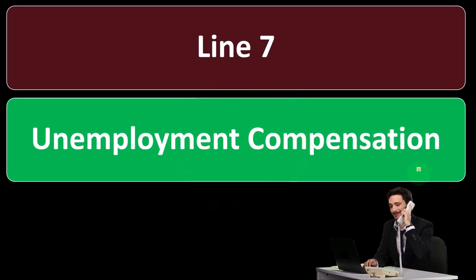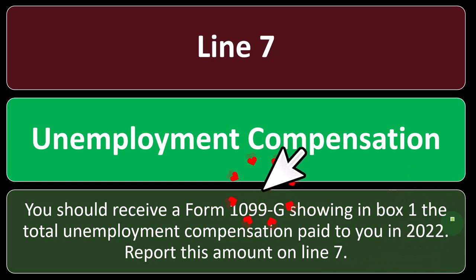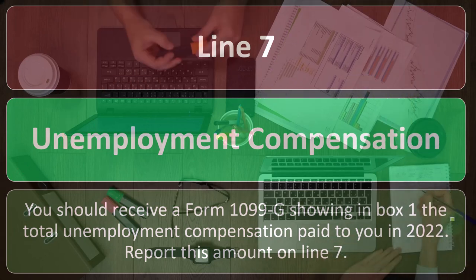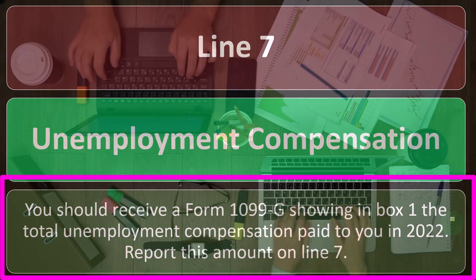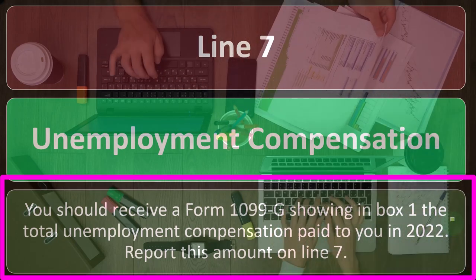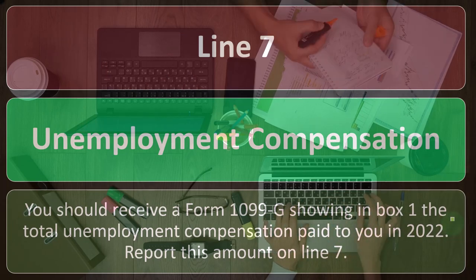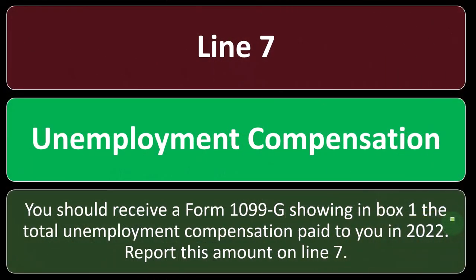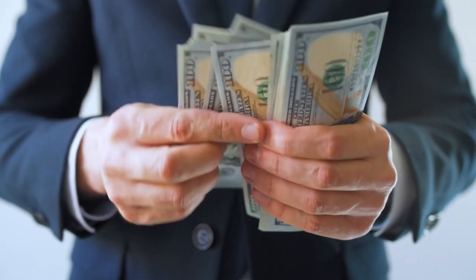Line 7: Unemployment Compensation. You should receive a Form 1099-G showing in box 1 the total unemployment compensation paid to you in 2022. Report this amount on line 7. It's usually a fairly straightforward data entry. If you're a tax preparer, you deal more with the questions than with difficulty doing the input. The question is typically: I lost my job and got unemployment compensation — why should I include that in income? And the answer is: because it's compensation, you have to include it in income generally.